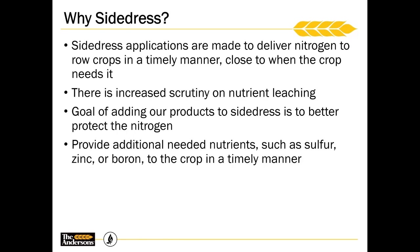So why side dress? This is really our opportunity to deliver nitrogen to our row crops in a timely manner, closer to when those crops need it. There's a lot more scrutiny when it comes to nutrient leaching, especially for early applications of nitrogen, so we want to make sure we're timing that to when the crop needs it. Better protection for that nitrogen is one of the key conversation pieces — really talking about volatilization and the opportunity to minimize that. We can also add other things into that tank mix besides nitrogen: things the plant needs through the root system, sulfur, zinc, and boron in a more timely manner.